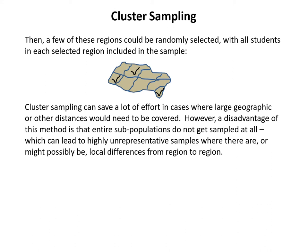There is one really important disadvantage of cluster sampling: because some of the subpopulations — some of these clusters — don't get sampled at all (it's all or nothing for each cluster), you could end up with very highly unrepresentative samples compared to the overall population, particularly if there are significant differences in what you're observing or measuring from cluster to cluster.